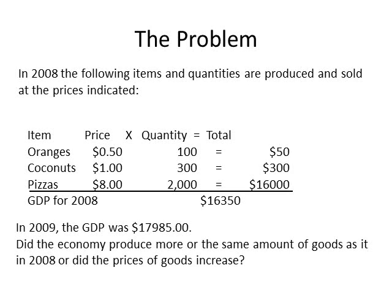Now, let us suppose that the following year the economy generates $17,985 for GDP. The question that economists want to know: is the economy doing better in 2009 or worse? While it may seem like an easy question, it is frankly a difficult question to answer because GDP is dependent both on the quantity of goods produced and the price of goods. Let's examine the problem in more detail by looking at three different scenarios.